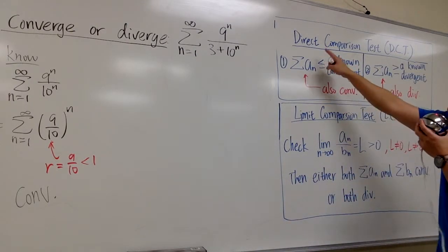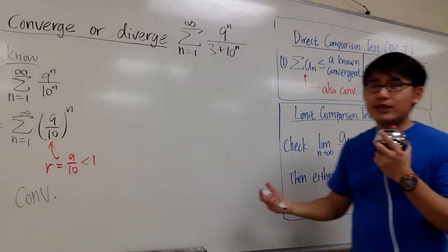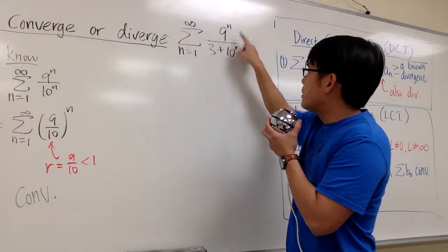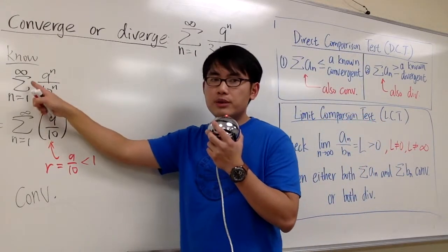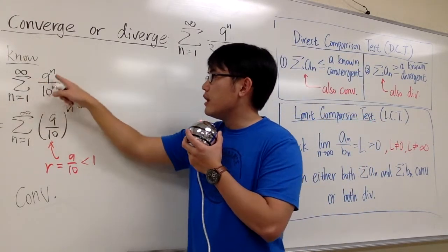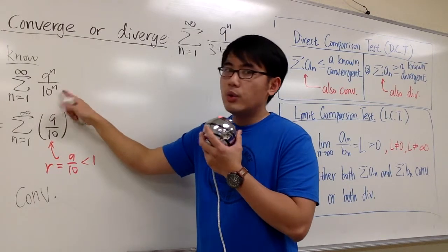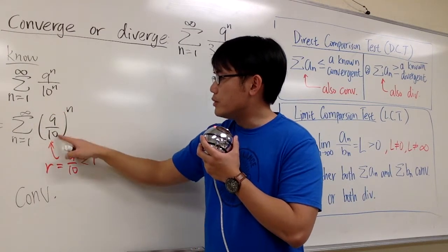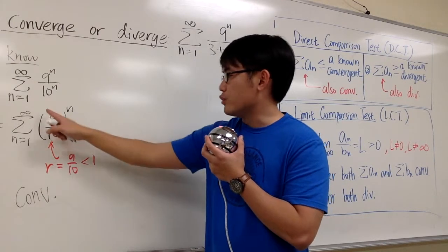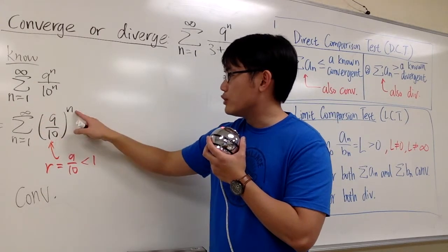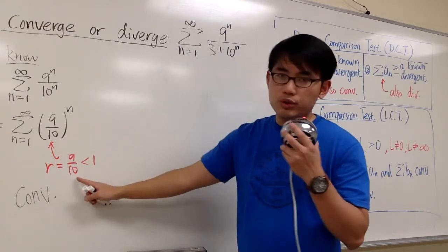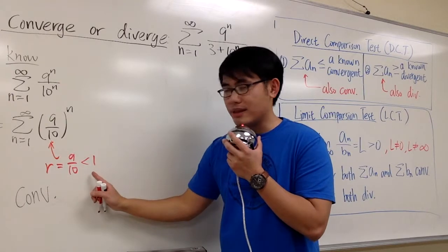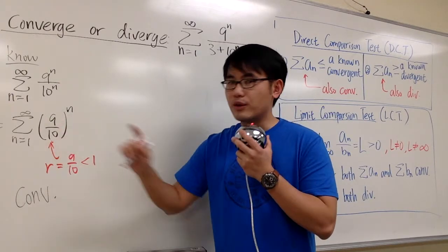To run through the direct comparison test, we still have to come up with something we know much better, so we consider 9 to the n on top over 10 to the n. We're talking about the series where n goes from 1 to infinity of 9 to the n over 10 to the n, which is just the same as a geometric series with common ratio 9 over 10 — we write this as (9/10) raised to the n — and because the common ratio is less than 1, therefore this converges.